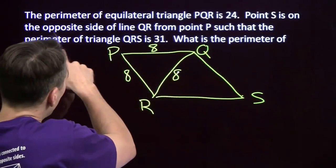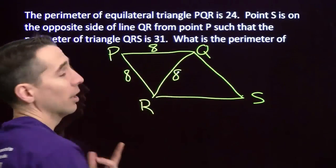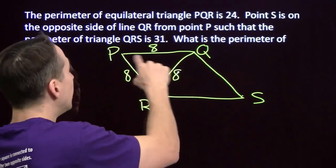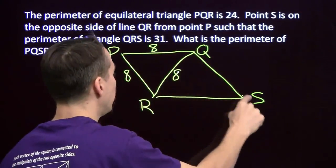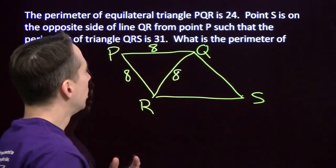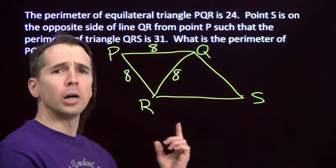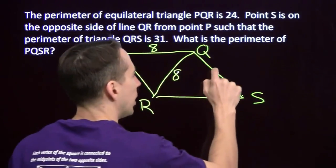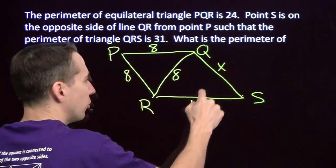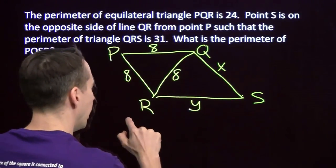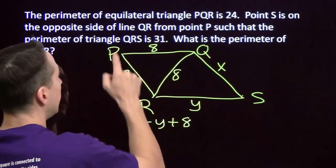Now we're on to the next sentence. We've got the perimeter of triangle QRS. That means we add these three sides, we get 31. Now if only we can find these other two side lengths, then we can get the perimeter we want. The whole thing - P, Q, S, R. I know that this is 8, but I don't know what these two are. Now I can put in variables for it, X and Y. And what I do know is that X plus Y plus 8, I know that X plus Y plus 8 equals 31.